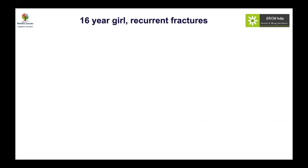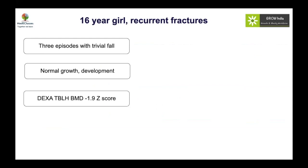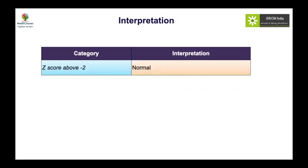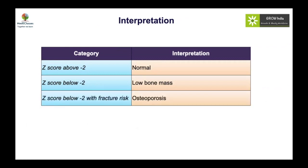For example, a 16-year-old girl with recurrent fractures — three fractures, normal growth and development — had her BMD reported as just low using adult software, and treatment was advised. When re-evaluated with pediatric software, the Z-score was actually worse. So adult software gives a falsely reassuring result. For interpretation: a Z-score above minus 2 is normal; a Z-score below minus 2 in children is labeled as low bone mass, not osteoporosis.